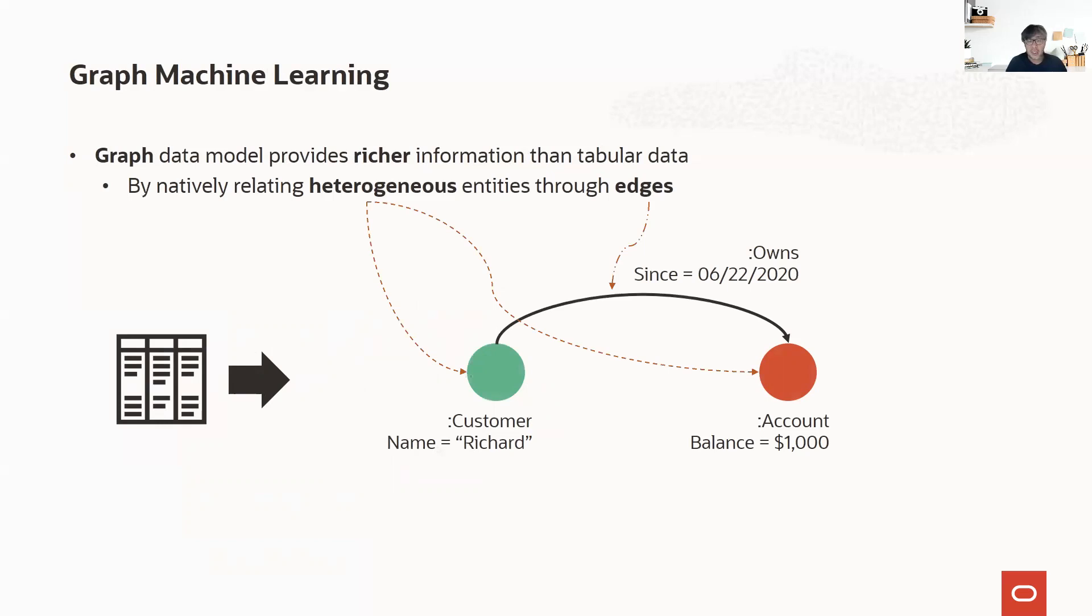The graph shown in this slide is a fragment of a financial transaction graph, which tells us a customer Richard has owned an account whose balance is $1,000 since June 22, 2020. The graph naturally contains the account holding relationship between two different types of entities: customer and account. The natural employment of heterogeneous entities and relations as first-class citizens enables the graph data model to be an information-rich data model.